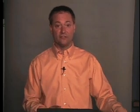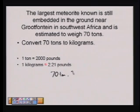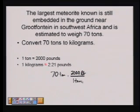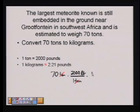In another example, the largest meteorite known is still embedded in the ground in Africa and is estimated to weigh 70 tons. We want to convert 70 tons to kilograms. To do this, I need to know that 1 ton is 2,000 pounds and that 1 kilogram is about equal to 2.21 pounds. The 'about equal' means it has been rounded to the nearest hundredth. To do this problem, I'm going to start with 70 tons and multiply by 2,000 pounds over 1 ton, then multiply by 1 kilogram over 2.21 pounds.